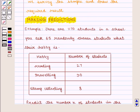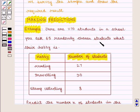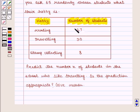Let us take an example to understand predictions. There are 1170 students in a school, and we get to know that 27 students like reading, 30 like traveling, and 8 like stamp collecting. We want to find the number of students in the school who like traveling.